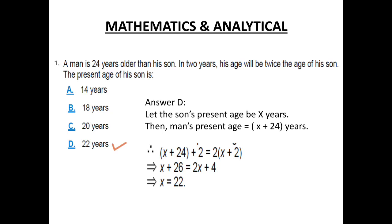Now let's make up an equation. The second part of the question says, in 2 years, his age will be twice the age of his son. So x plus 24 plus 2 equals twice of x plus 2. After simplifying, x plus 26 equals 2x plus 4. So x equals 22.